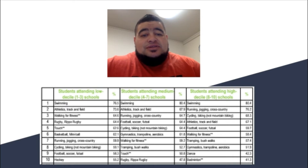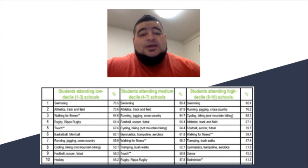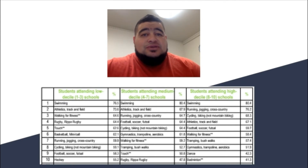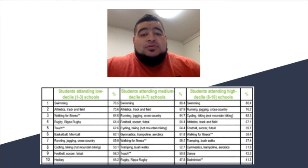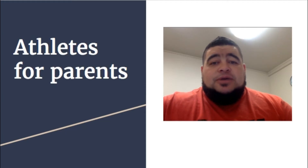Moving down the list, only one or two sports really stand out as costing a lot of money. Road cycling is one that would cost a fair bit — it sits around third for higher socioeconomic groups but drops to around eighth for lower socioeconomic groups. Other than that, there's not a huge differentiation between the types of sports being participated in across different socioeconomic backgrounds.